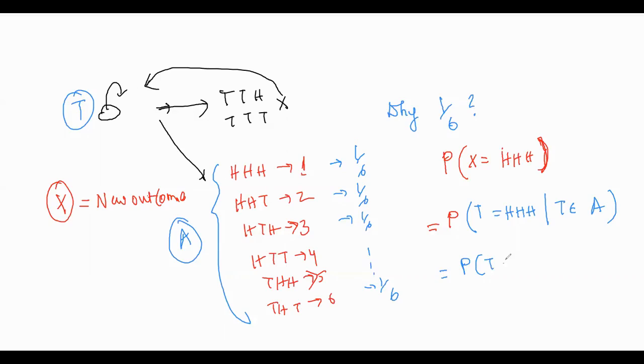So it means that probability T is equal to HHH and T belongs to A, by probability T belongs to A. Which means that probability T is equal to HHH by probability T belongs to A. That means this is 1 and this is 6. It's 1/8 and it's 6/8. So therefore it's 1/6. So we got the desired die. Beautiful. Very good. You got the die.